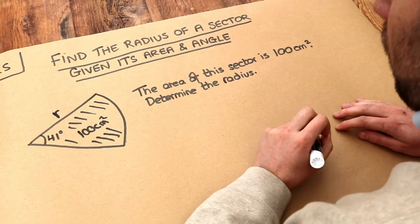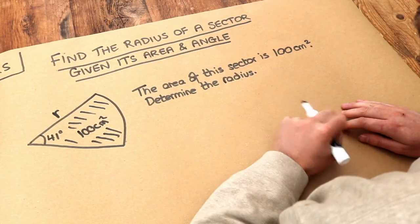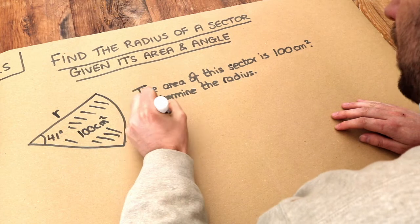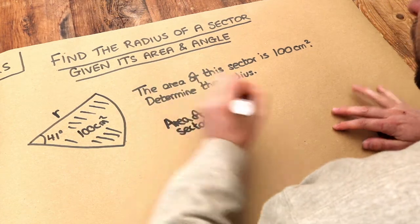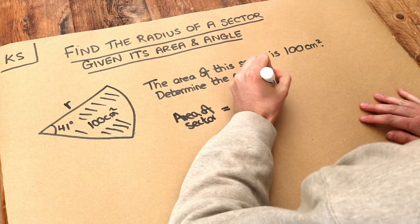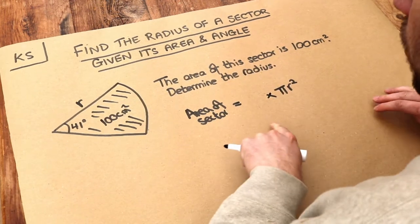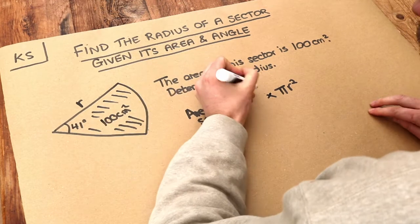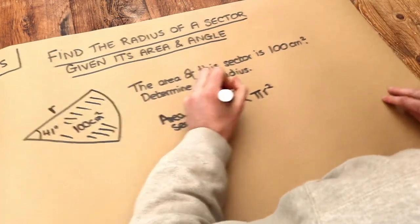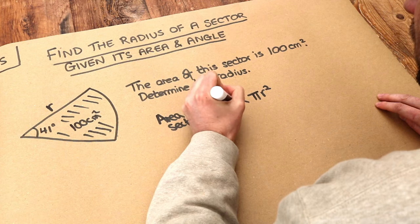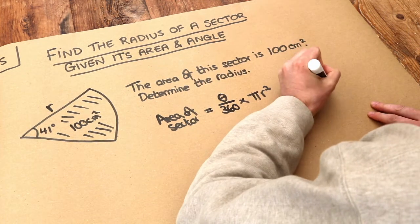Now do you remember there was a formula for working out the area of the sector? We saw that in a previous video. The area of the sector was this: we start with the area of a full circle, so pi r squared, and then we find the appropriate fraction of it. So whatever the angle was here, let's call it theta, we do that angle over 360.